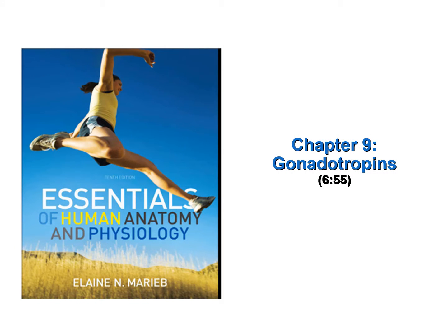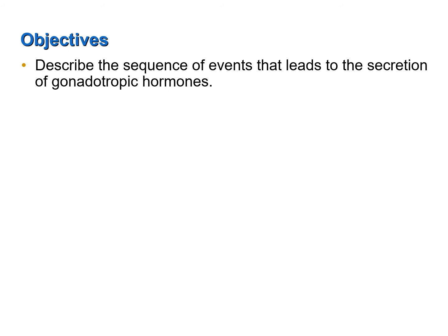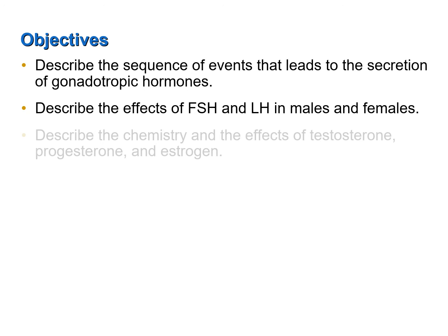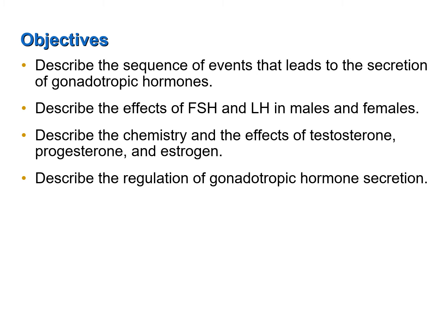Gonadotropins is the topic of this screencast, which may be found in Chapter 9 of your textbook. This screencast was designed to achieve the following objectives: describe the sequence of events that lead to the secretion of gonadotropic hormones; describe the effects of follicle stimulating hormone and luteinizing hormone in males and females; describe the chemistry and the effects of testosterone, progesterone, and estrogen; and describe the regulation of gonadotropic hormone secretion.